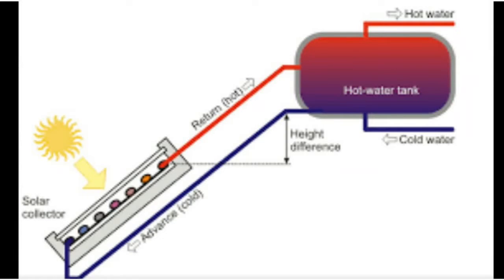The function of this flat plate collector is to absorb the solar energy and then the water gets heated. When this cold water gets heated, its density becomes lower and it moves to the upward side. When the temperature increases, the water moves upward and from the top pipe it enters the storage tank, from where hot water is withdrawn for use.